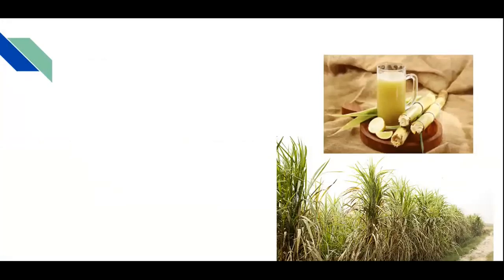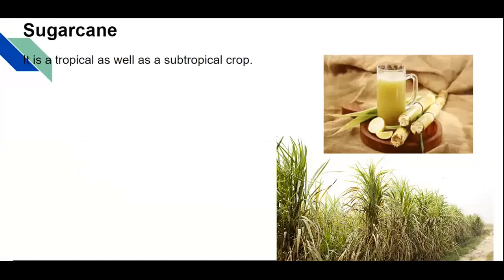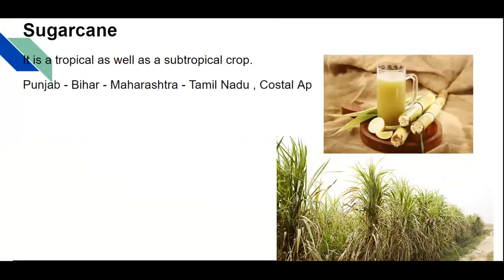Sugarcane grows in tropical as well as subtropical regions. When we look at the Indian context, we can see it is growing from Punjab to Bihar in the northern plains region, as well as in Maharashtra, Tamil Nadu, and the coastal places of Andhra Pradesh. These are the important places.